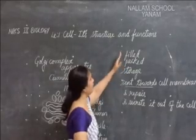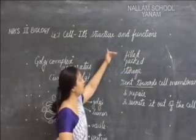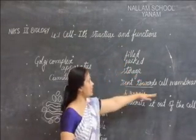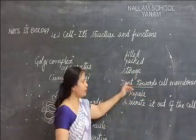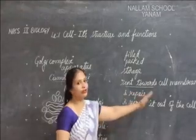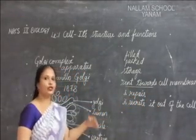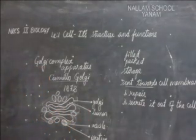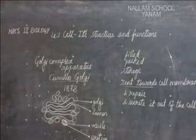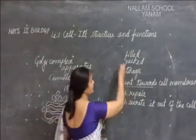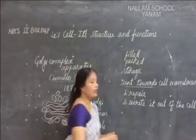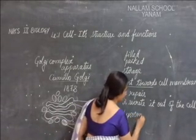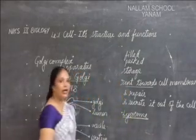Let us see once again the Golgi complex's function. First, they fill the sac-like structures, they are packed, they are stacked, they are stored. Then they are sent towards the cell membrane — to repair the cell membrane or to send it out of the cell, which we call secretion. They are present in more number in cells where hormones and enzymes are released. The Golgi complex also sends materials to another organelle called the lysosome.